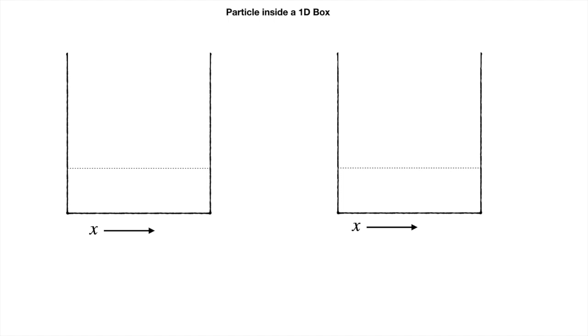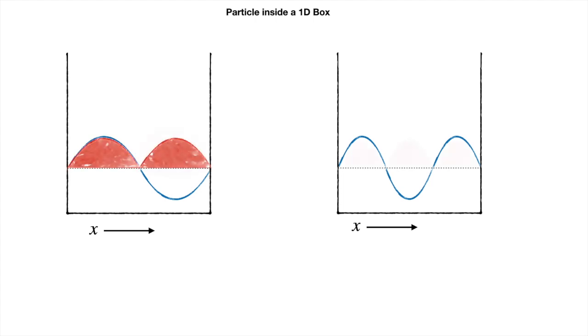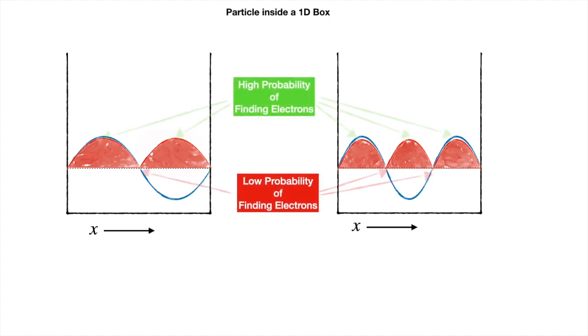So if you have a particular wave function and you square it — as you can see on screen — you get a pattern that tells you which regions have a higher probability of finding the electron and which regions have a lower probability. This is a very fundamental result in quantum mechanics, and all the theories developed later in quantum mechanics are actually dependent upon it. |ψ|² is your probability density.